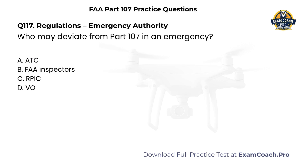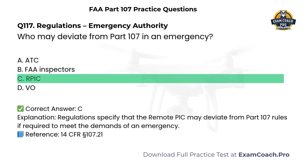Regulations. Emergency authority. Who may deviate from Part 107 in an emergency? A. ATC. B. FAA inspectors. C. Remote PIC. D. Visual Observer. Correct answer: C. Regulations specify that the Remote PIC may deviate from Part 107 rules, if required, to meet the demands of an emergency.